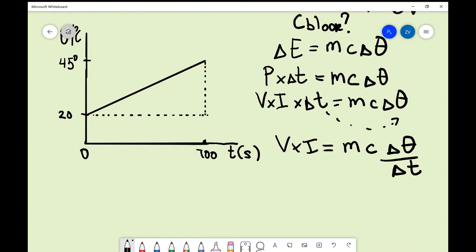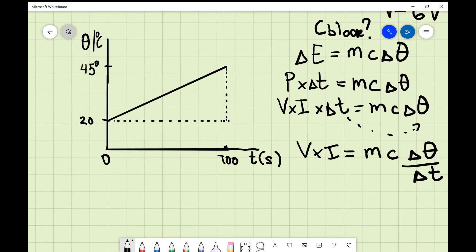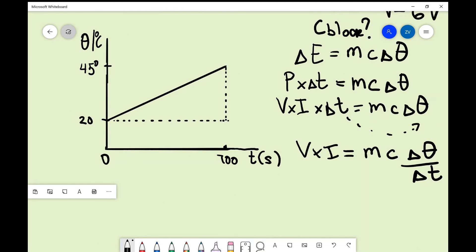Have a minute, change in temperature over change in time. Look at that. This is actually equal to the gradient of this graph. Because remember the gradient is equal to change in y over change in x, essentially rise over run. So this is actually equal to change in temperature over change in time.